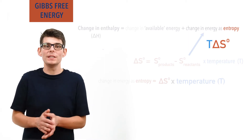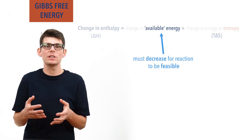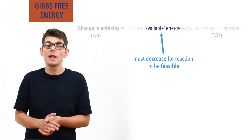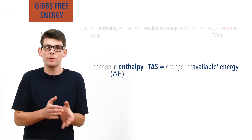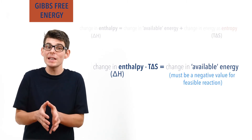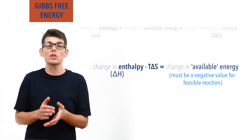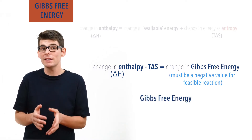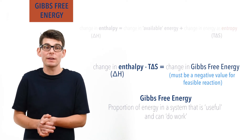For a reaction to be feasible, we need the amount of useful available energy in the system to decrease overall and become more spread out in the universe, increasing the entropy of the whole universe. The easiest way to check this is to ensure that when the change in unavailable energy, T delta S, is subtracted from the overall heat energy change (enthalpy), the value is negative. As long as the value is negative, there is less available useful energy in the system after the reaction than before. The value obtained is called the change in Gibbs free energy — basically a way of describing how much energy a system has that is useful and can be used to do something, like start a reaction.